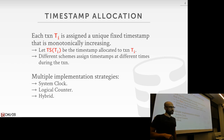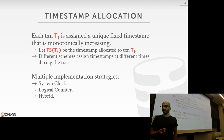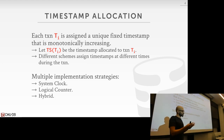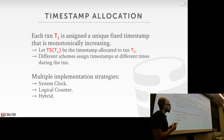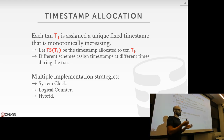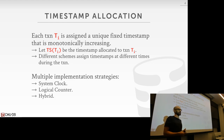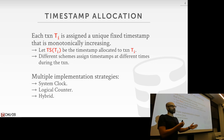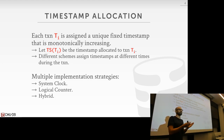The database has this TS function that takes a transaction ID and returns the timestamp. Different timestamp protocols assign timestamps at different points during execution. Importantly, these timestamps don't necessarily correspond to wall clock time, because they could be assigned at any point — not necessarily when the transaction enters the system or when it's about to commit.